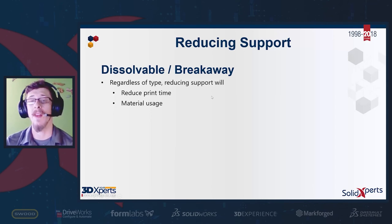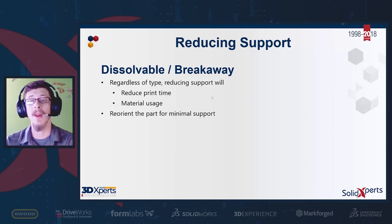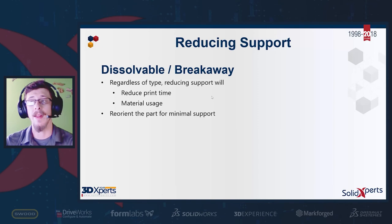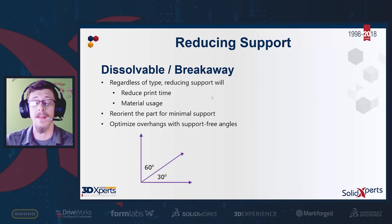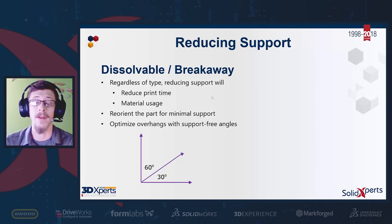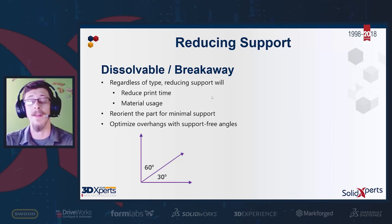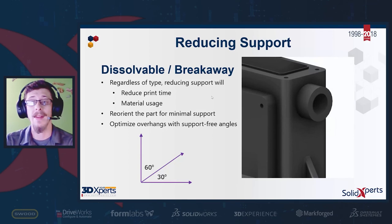If we can reduce the amount of support necessary by controlling those angles, we can eliminate the need for support, reducing print time and material usage. One of the easiest ways is the orientation of the part — orient it for the least amount of support while still catering to the stresses in the part. The Mark Forged Mark II and EX7 enable support at 45 degrees in Eiger slicing software, but overhang tests show positive results at 60 to 65 degrees.